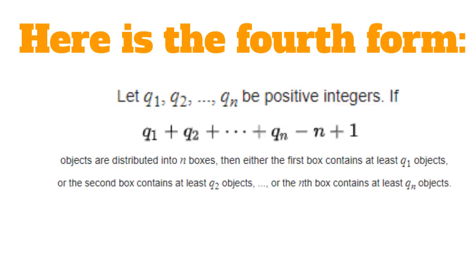Here is the fourth form. Let q1, q2, all the way to qn be positive integers. If q1 plus q2 plus all the way to qn minus n plus 1 objects are distributed into n boxes, then either the first box contains at least q1 objects, or the second box contains at least q2 objects, all the way to the nth box containing at least qn objects.